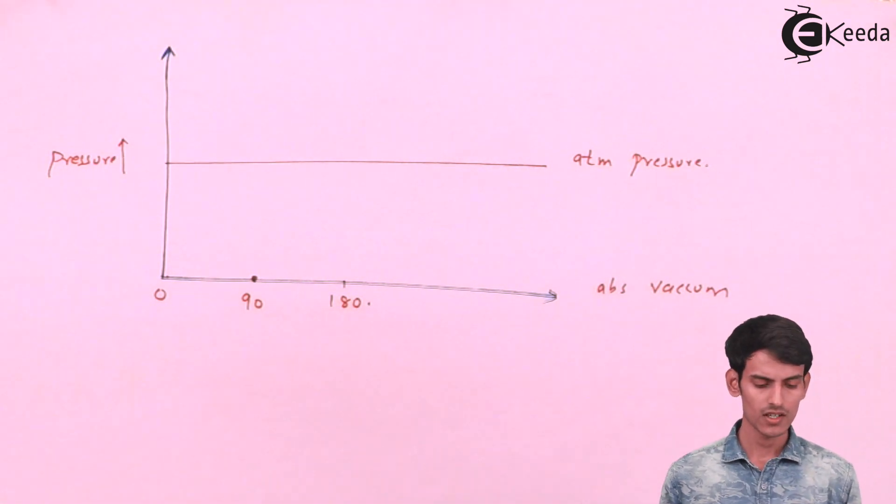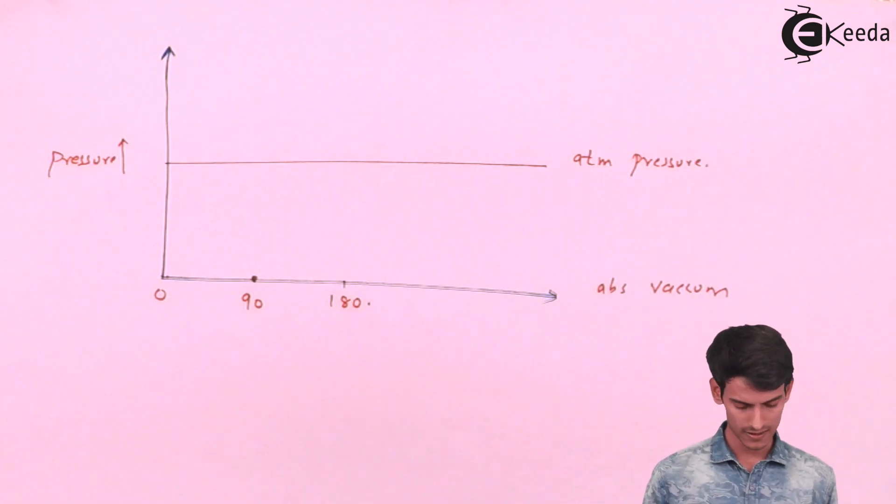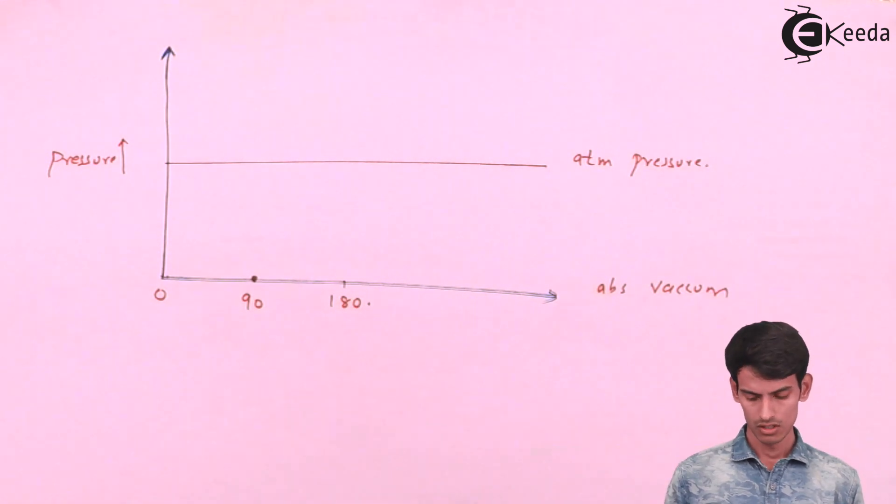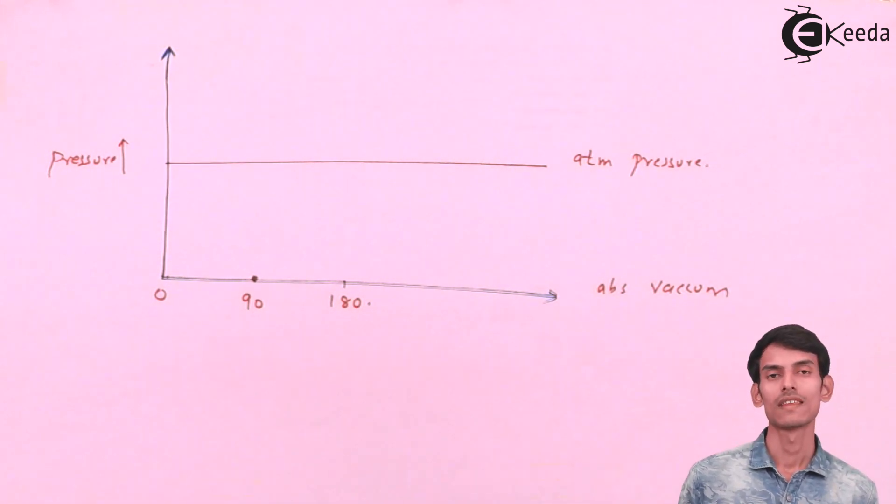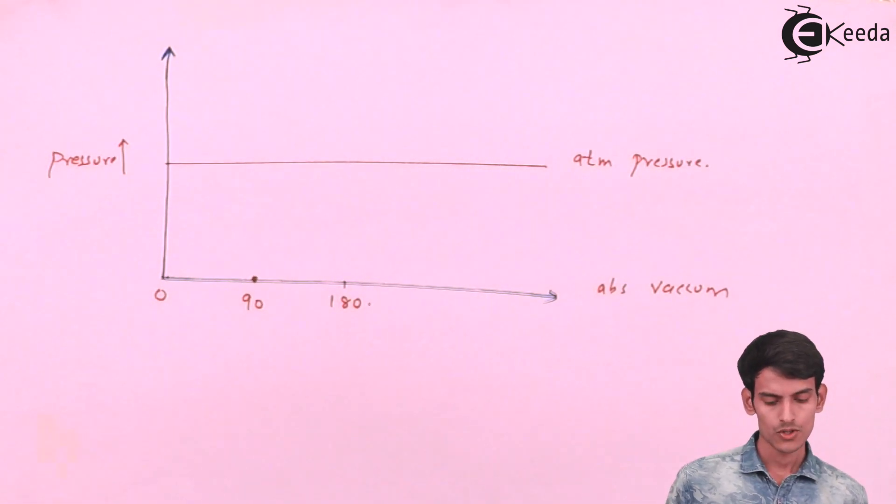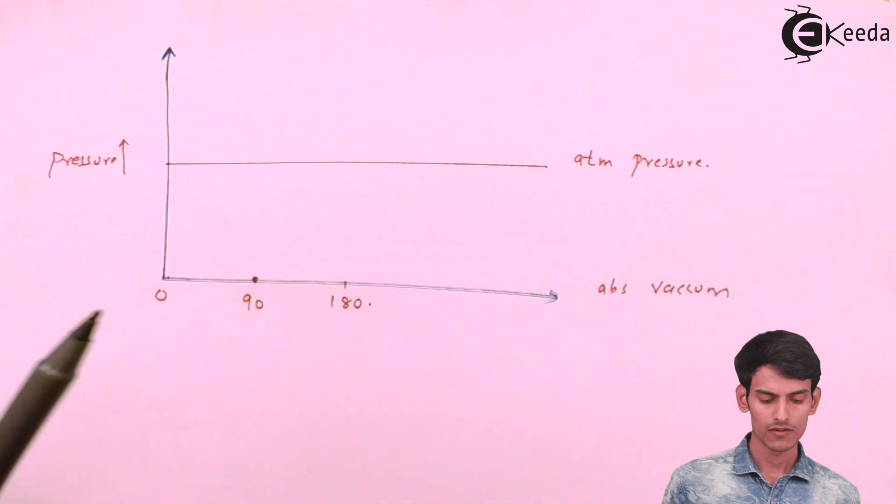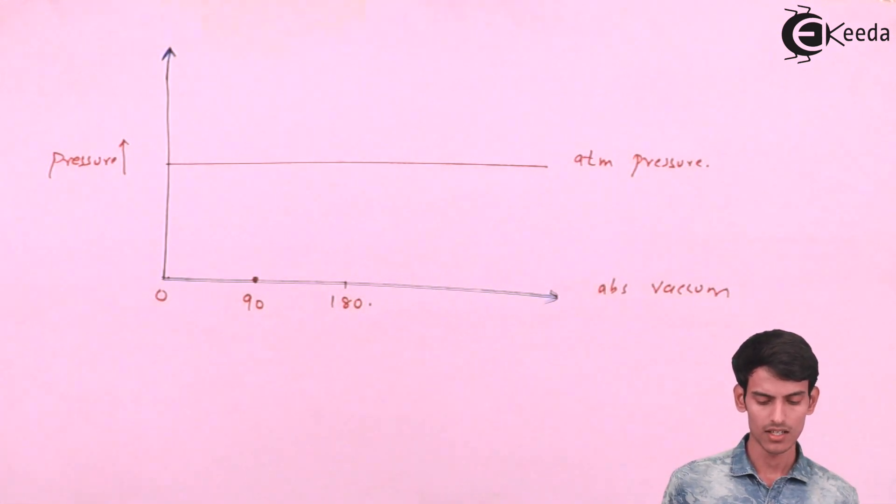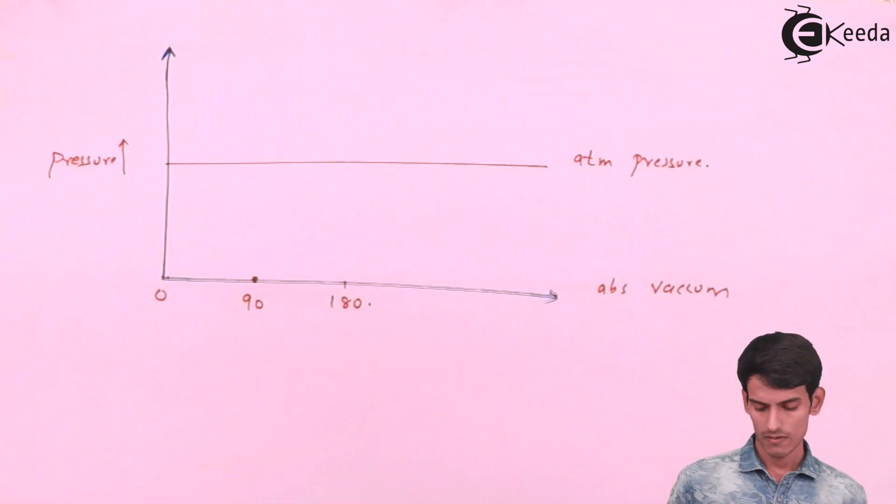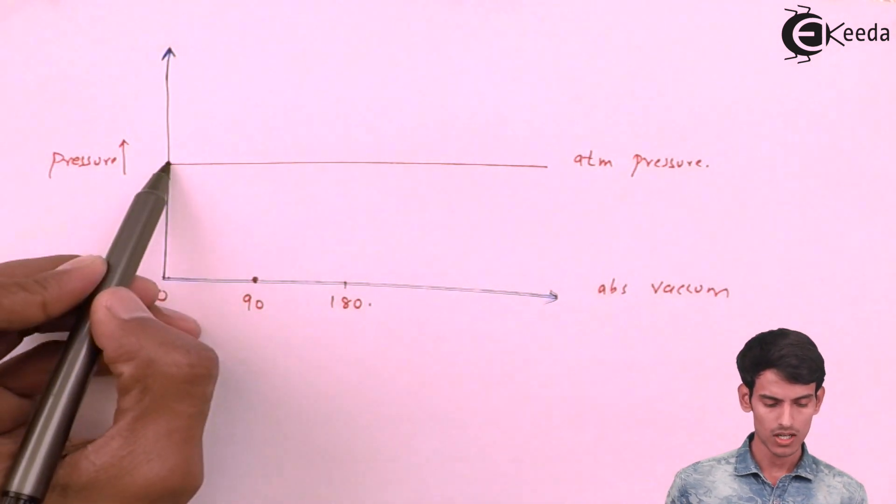So as you can see I have drawn the indicator diagram again. Let's try and understand the effect of the suction pressure and the acceleration HS and HAS on this graph. So this red line as you can see is the atmospheric pressure. This line indicates absolute vacuum. And when the piston is about to start it is at this point we all know that.